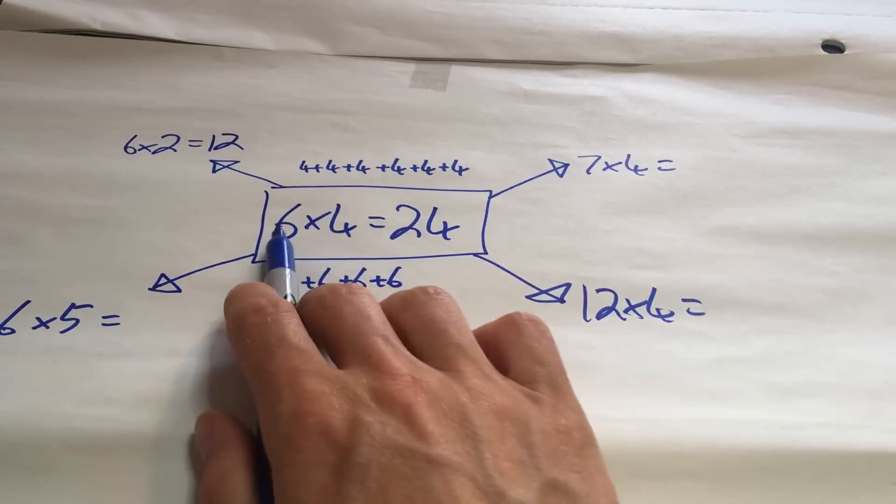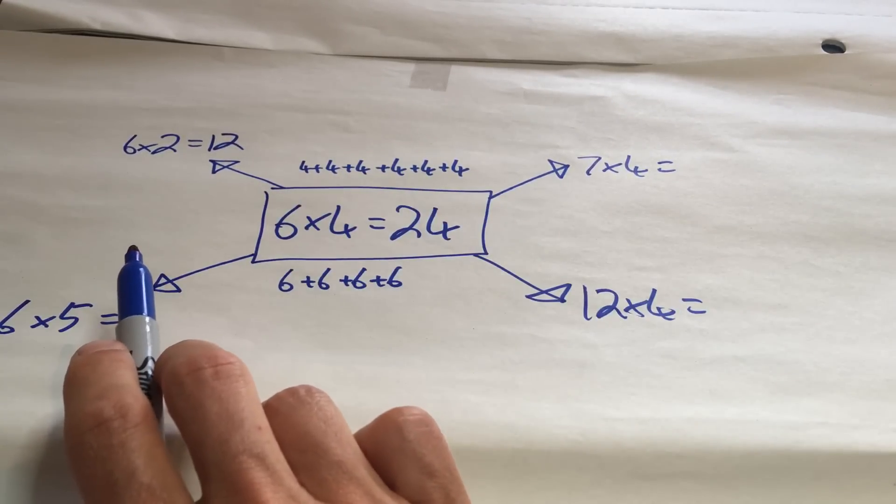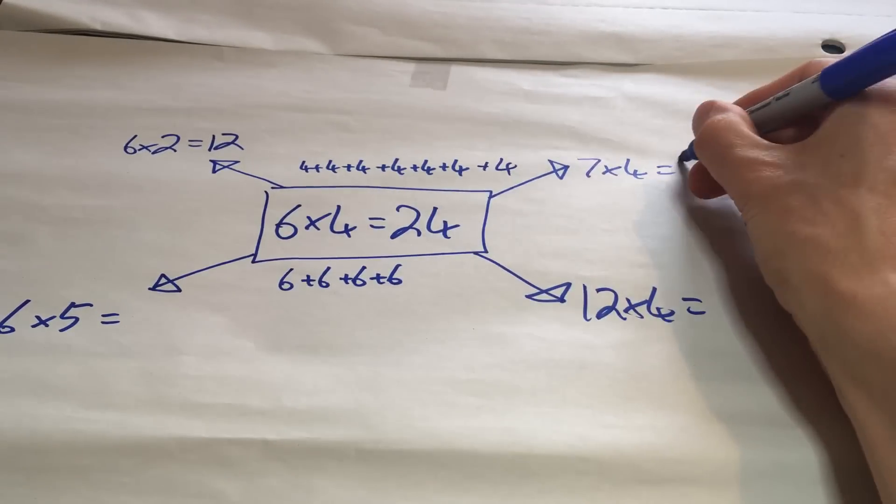7 lots of 4 compared to 6 lots of 4. That is 1, 2, 3, 4, 5, 6 lots of 4. So, 7 lots of 4 would be 1, 4 more. So, it would be 28.